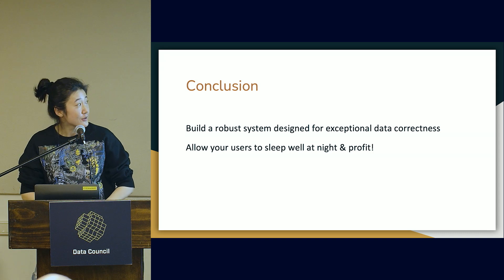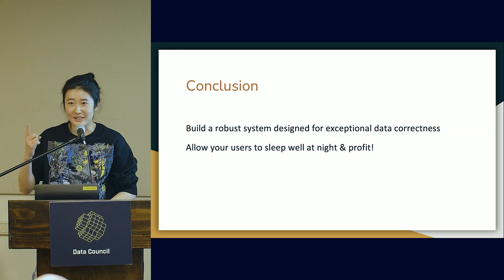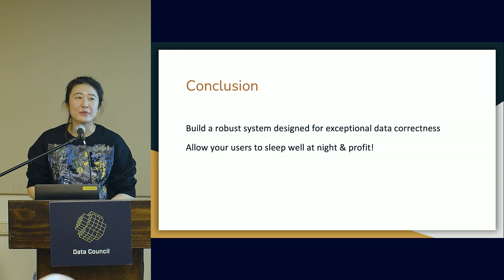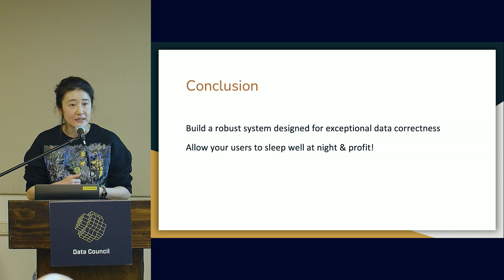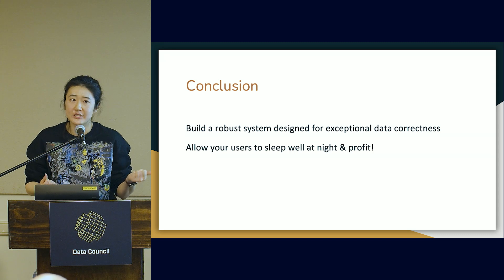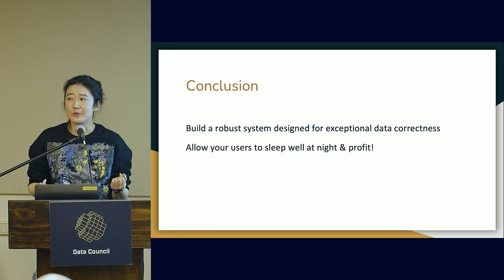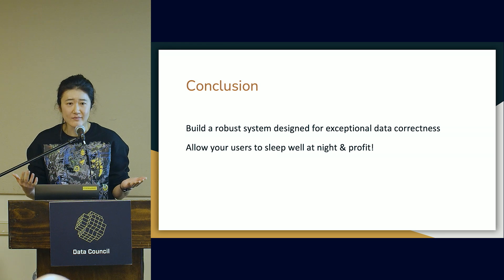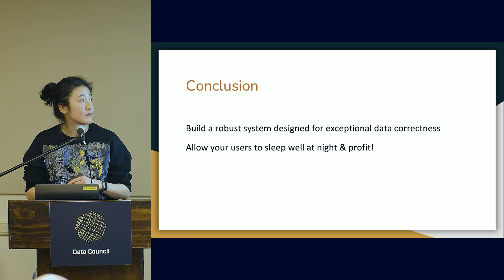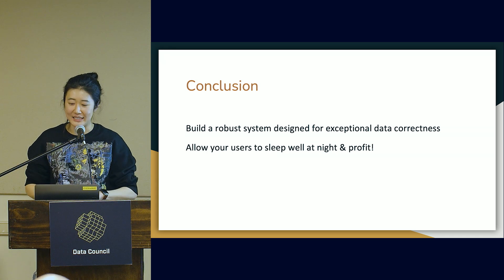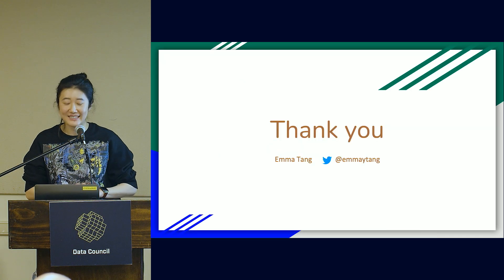The conclusion: build a good data system. You can add steps for data correctness all throughout the stack from beginning to end. Because we did this so early on at Stripe, we just sleep better at night — we know things will be as correct as we'd prefer. And because the system is designed the way it is, it's very self-serving: you can ensure correctness on your own and know that things are going to be okay.